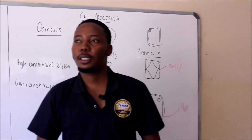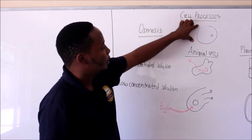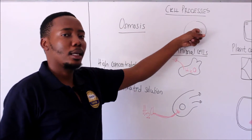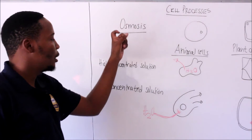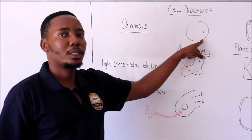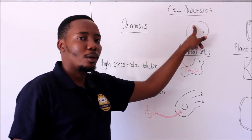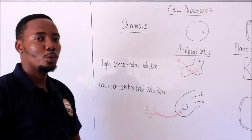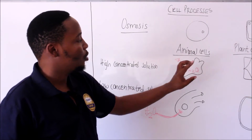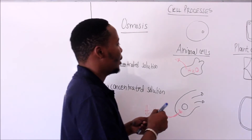Let's start with animal cells exposed to a highly concentrated solution. If you take this cell and put it in a high concentrated solution, it means this cell has a high water potential compared to the solution. As a result, the cell will lose water to the solution through the process of osmosis. Because the cell is losing water, the pressure inside the cell reduces, and a reduction in pressure will result in the cell becoming shapeless with a reduced volume — we say this cell has shrunken.